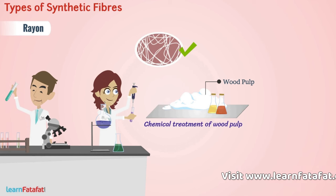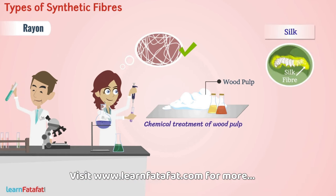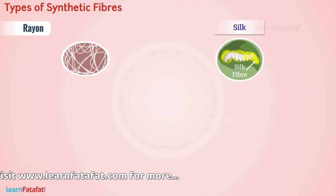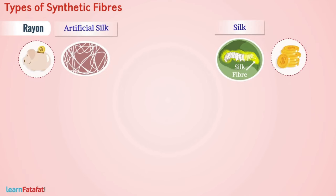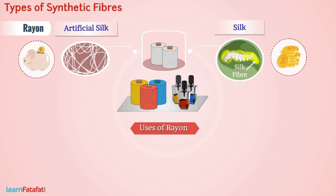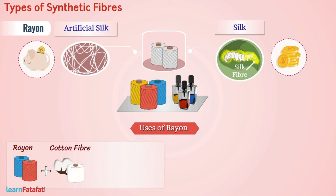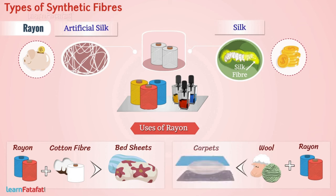This fiber has similar properties to that of silk. And so, it was named artificial silk, or rayon. It is cheaper than silk. It can be woven like silk fibers and can be colored similarly using dyes. Its uses include: it is mixed with cotton fibers to make bedsheets, and mixed with wool to make carpets.